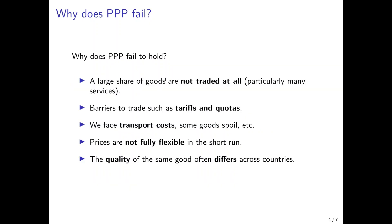So why does purchasing power parity typically fail? The main reasons are displayed on this slide. The first is that not all goods are traded at all. There is a large share, particularly of services, that cannot be traded. A haircut cannot be traded — if there is a hairdresser in New York, it is very difficult to sell that service to somebody located in Sydney. There are many such personal services that cannot be traded at all.